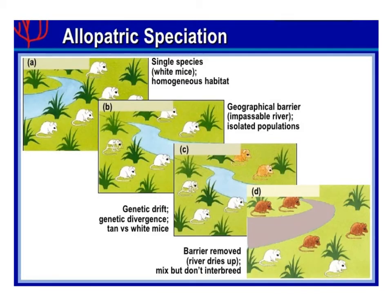These figures help us see how allopatric speciation works. If you look at figure A, you'll see that there's one single species of white mice. They all live in the same habitat, they all look the same, they interbreed with one another, they came from the same ancestor — they are one species. Now if you look at figure B, you'll see that there's a newly formed river; that's the geographical barrier we've been talking about. This river has now separated the one species of mice into two separate populations.